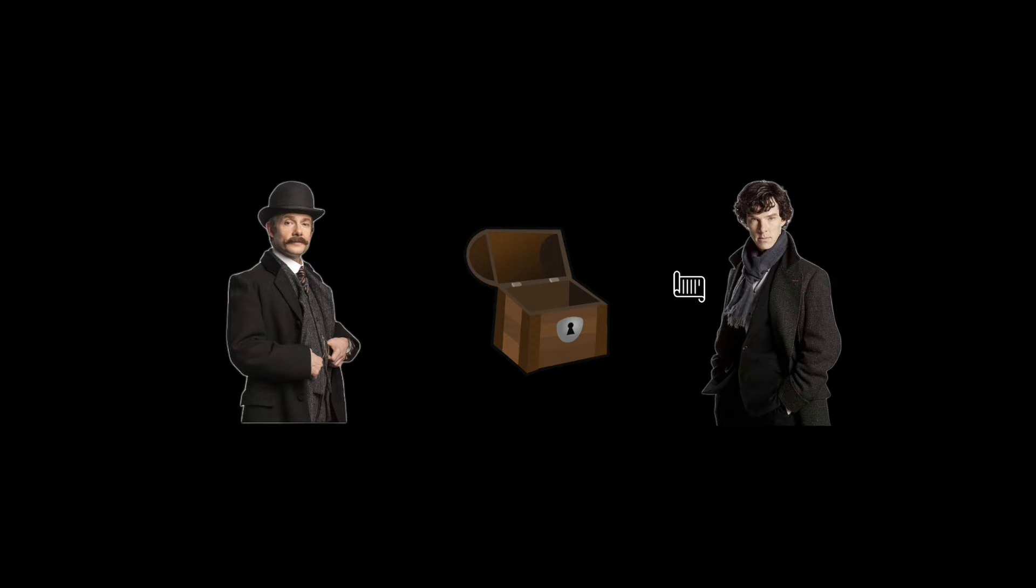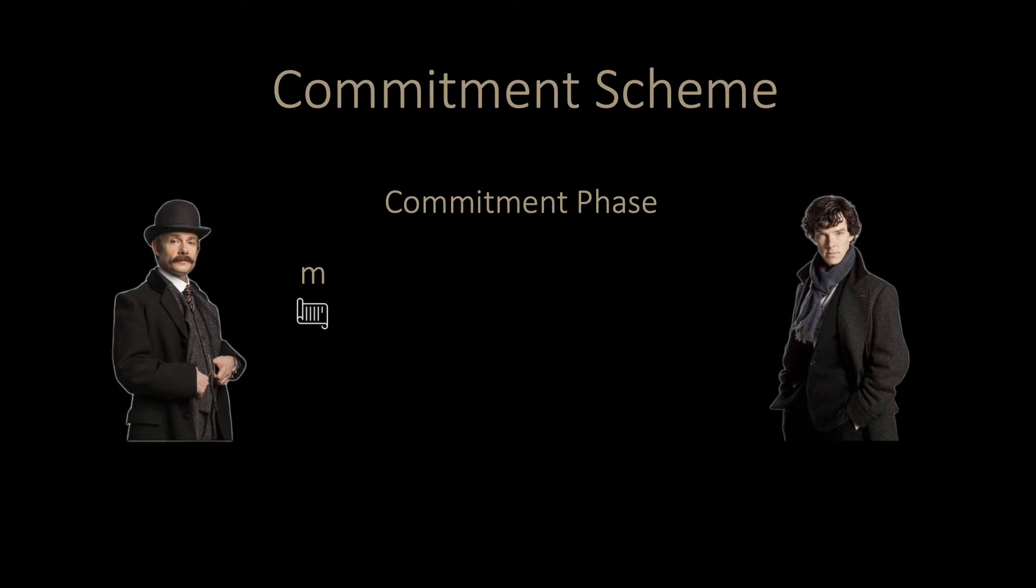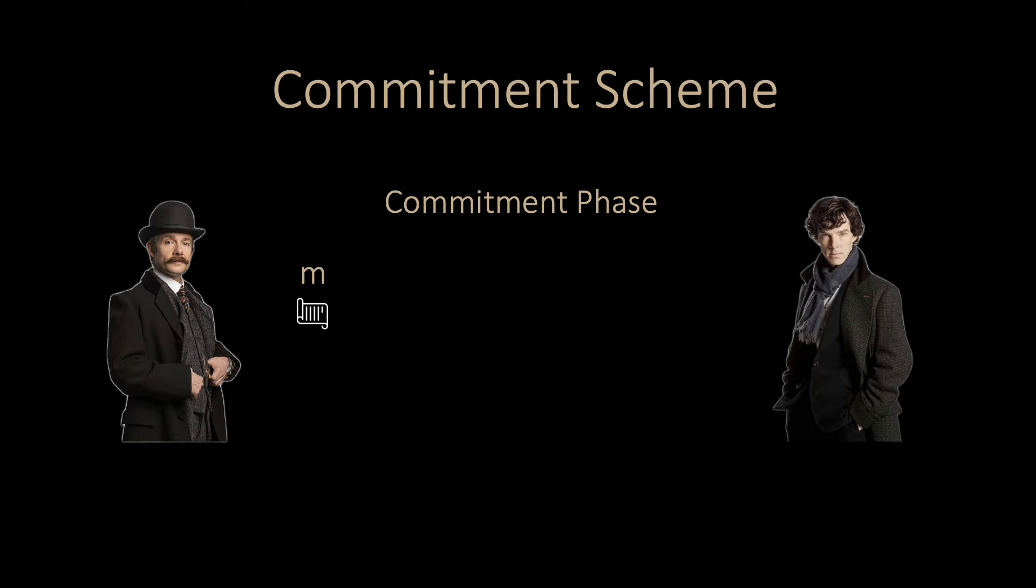The digital analogue of this protocol is called a commitment scheme in cryptography. More formally, a commitment scheme is a protocol between two parties who do not necessarily trust each other. We have two phases, the commitment phase, in which the first party commits to a value M by creating a commitment C and a secret key D. He only sends the commitment C to the second party and keeps the committed value M and the secret key D.